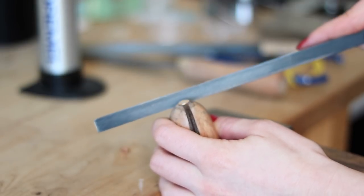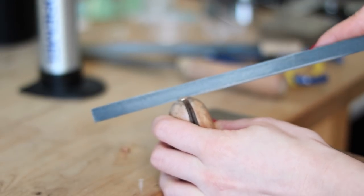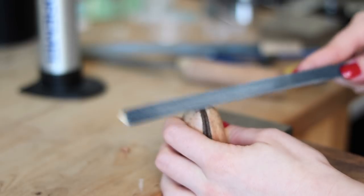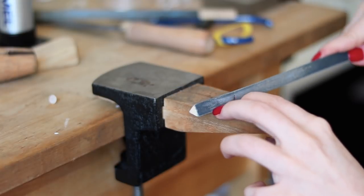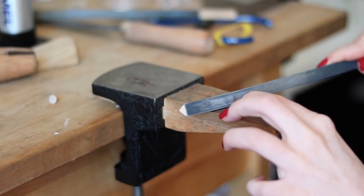Now with the earposts attached it's easier to file and polish so I am using a ring clamp to hold the earring and work on it. Smoothing the edges, rounding it up a bit more and sanding. Work on both sides of your earrings.